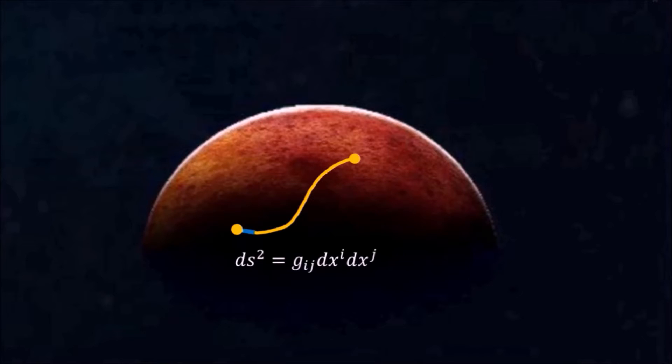The distance s along an arbitrary path between two points is simply the sum over the infinitesimal distances ds along a path.